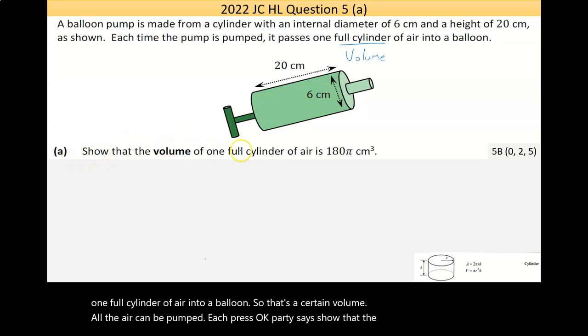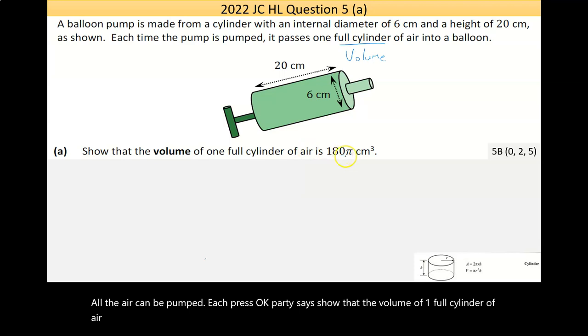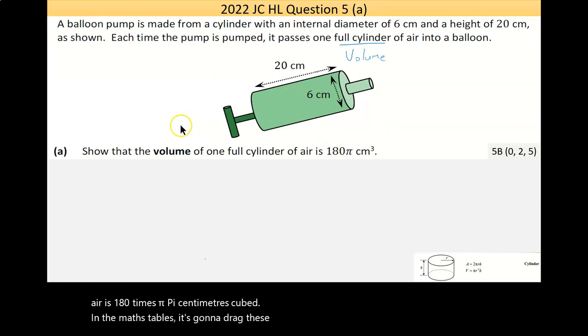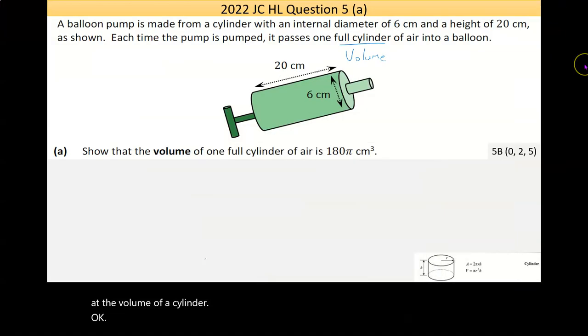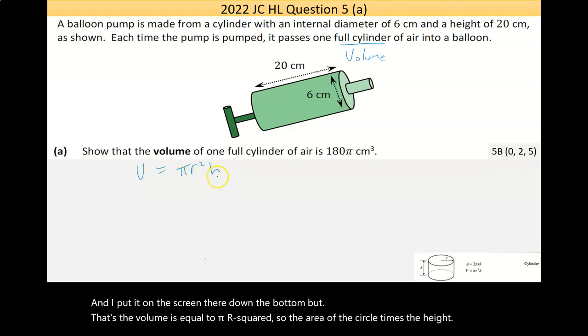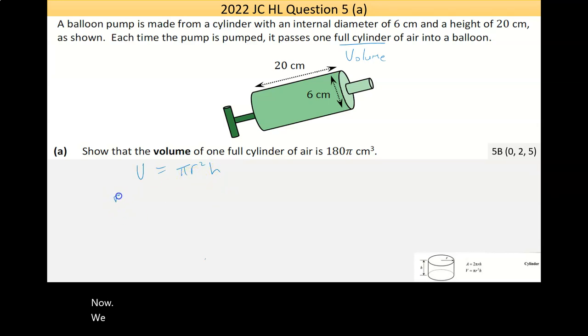Part A says show that the volume of one full cylinder of air is 180 pi centimeters cubed. In the maths tables, you're looking at area volume and the volume of a cylinder. I'm going to write that formula down. The volume is equal to pi r squared, the area of a circle, times the height. We need to know what the radius is and the height to find the volume.